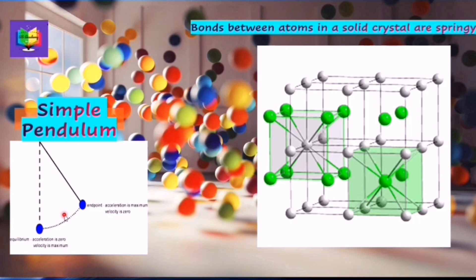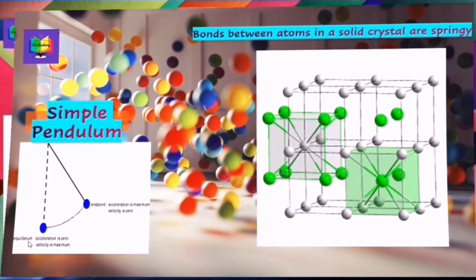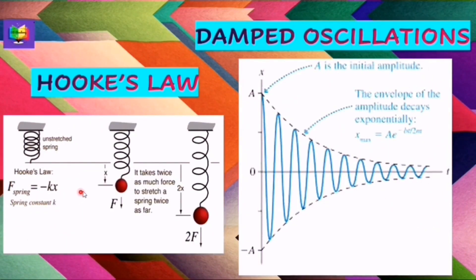Simple harmonic motion is defined in terms of the acceleration and displacement of an oscillator. A swinging pendulum has positive displacement and negative velocity. The restoring force that acts to return the mass to its equilibrium position is always proportional to the displacement of the mass from its mean position and is directed towards that point, as we already studied in the case of a mass attached to a spring.